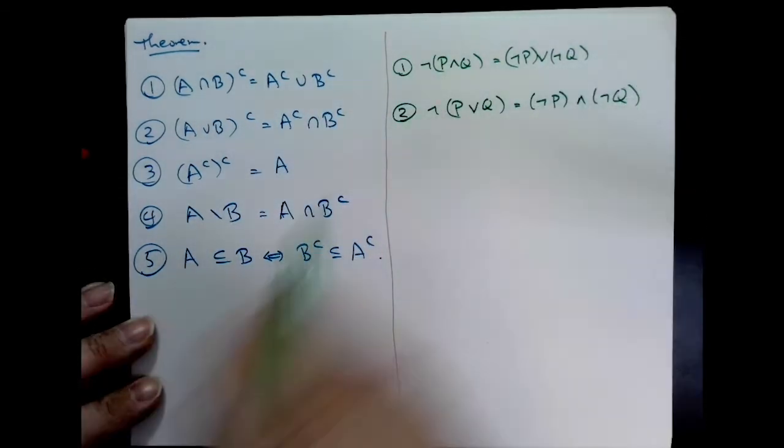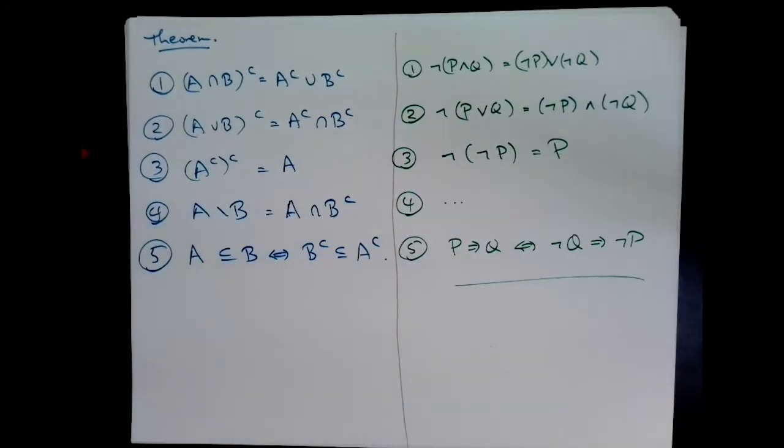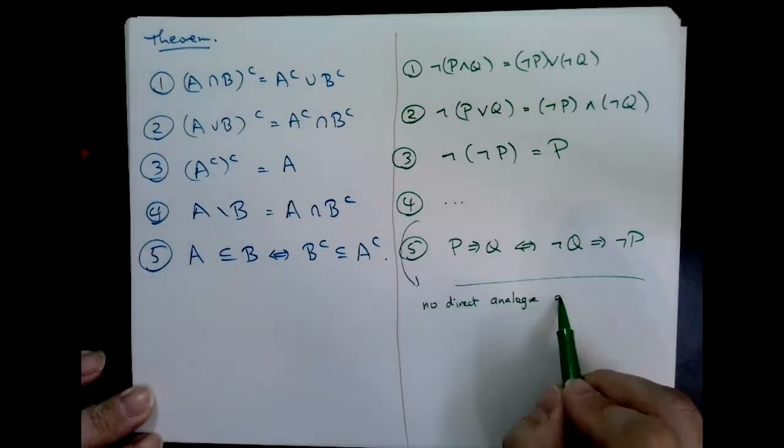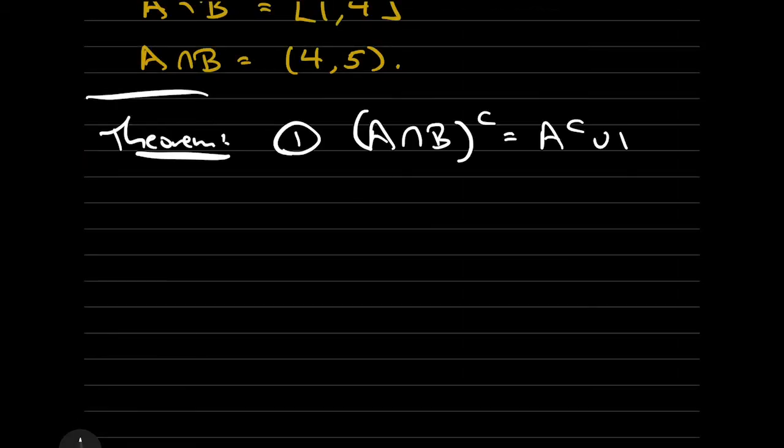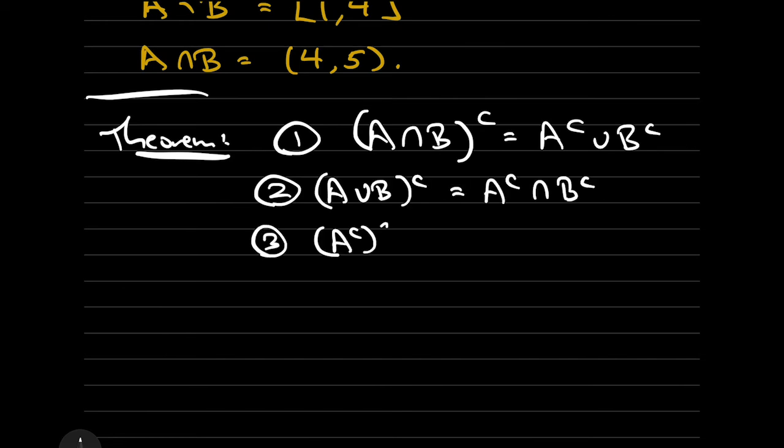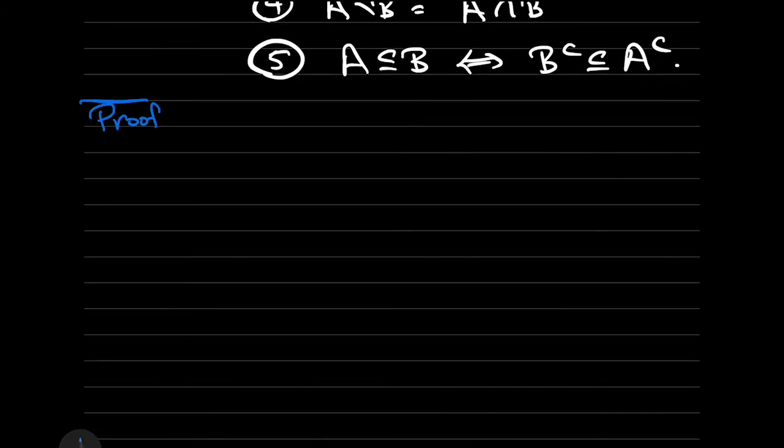We will prove a couple of these, and in keeping with the parallel between propositions and sets, the ones we prove will prove in a couple of different ways. Let us consider number 5, which says that A is a subset of B, if and only if B complement is a subset of A complement. The set theoretical proof of this is certainly doable.